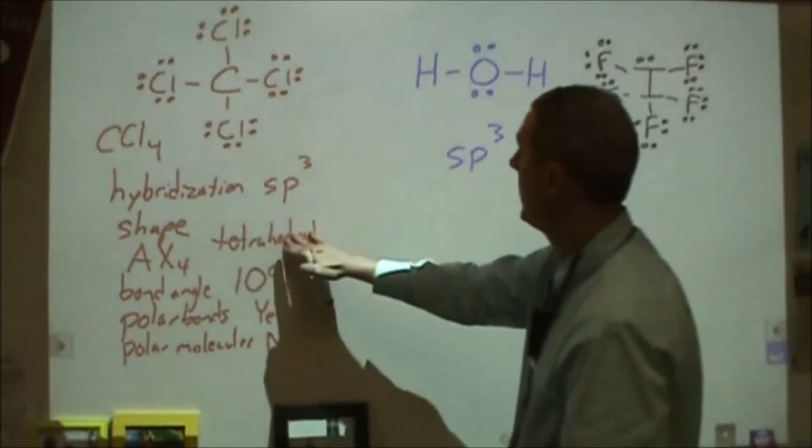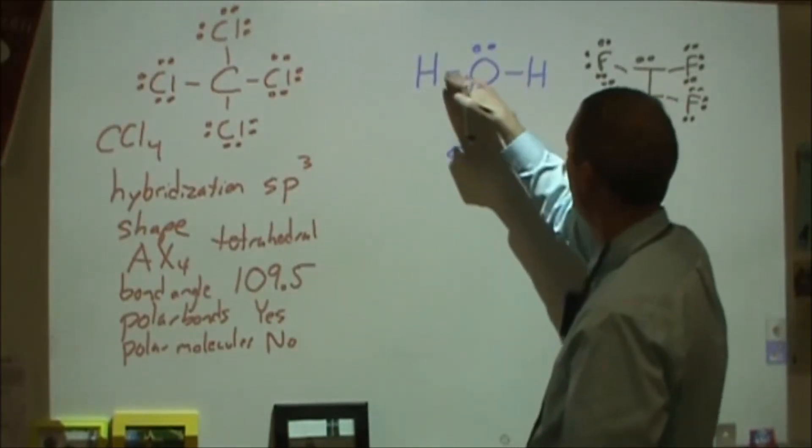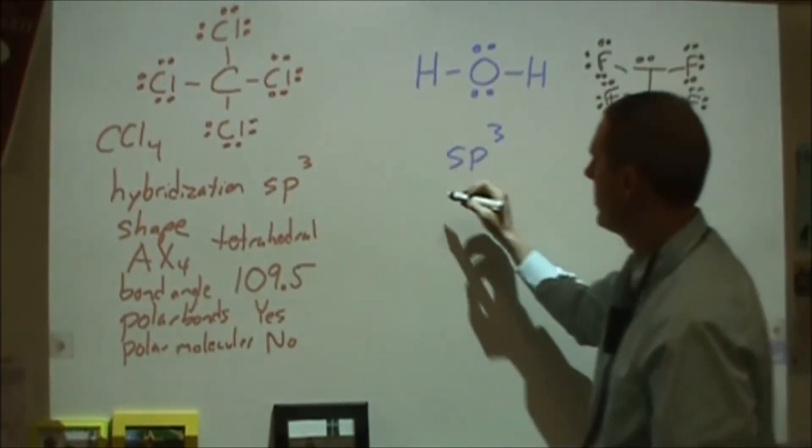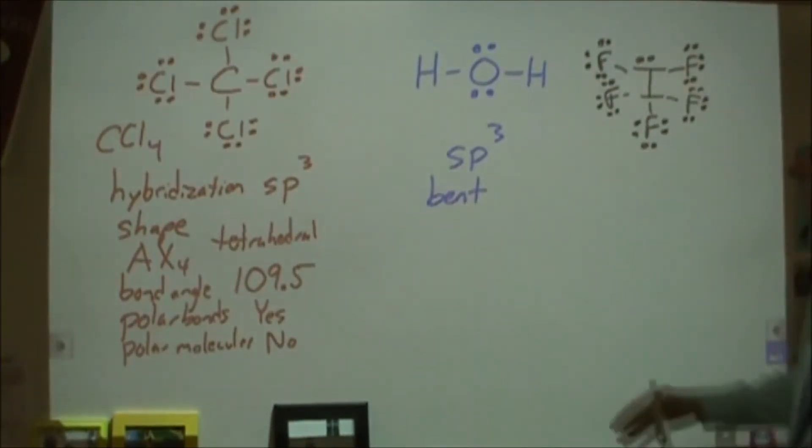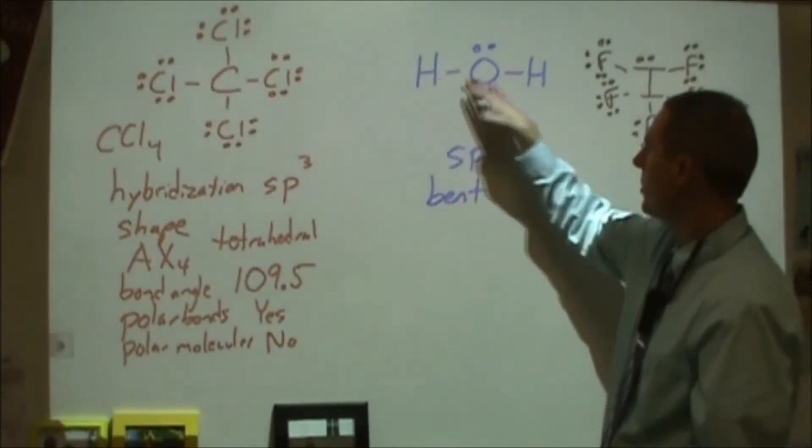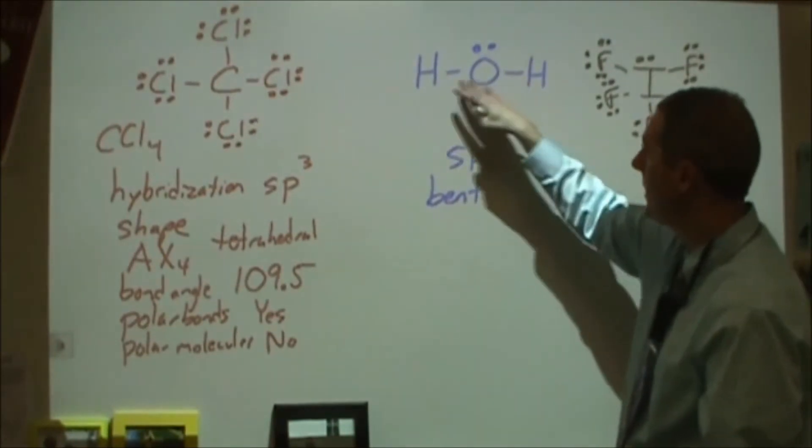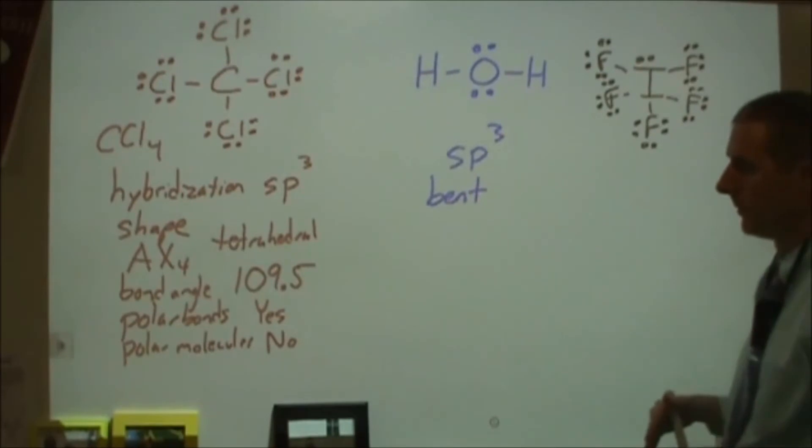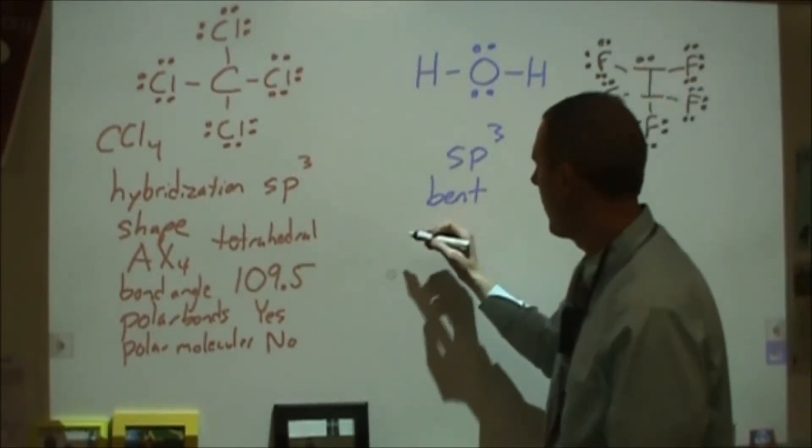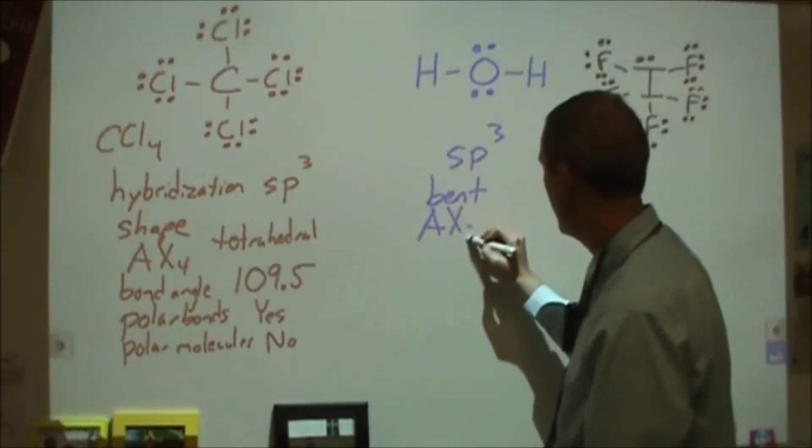For the shape, we're looking at a tetrahedral base shape, but we only have two atoms attached. And so this is going to be the bent or bent triatomic shape. But what's important to note is that that Lewis structure there indicates a straight line, and that is not true. This is going to be at an angle of about 105 degrees. So for our AX configuration here, we're looking at AX2E2.